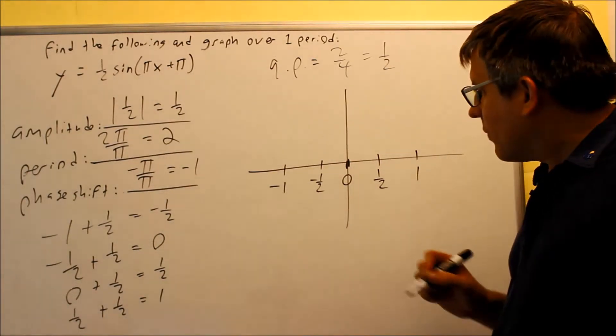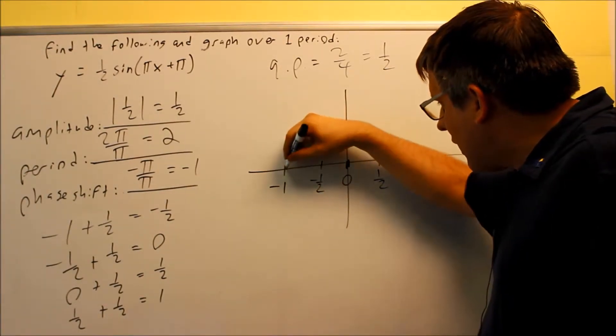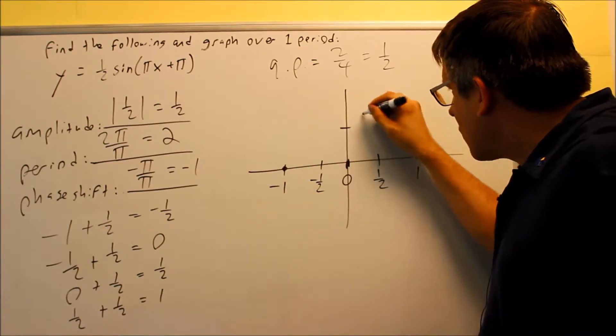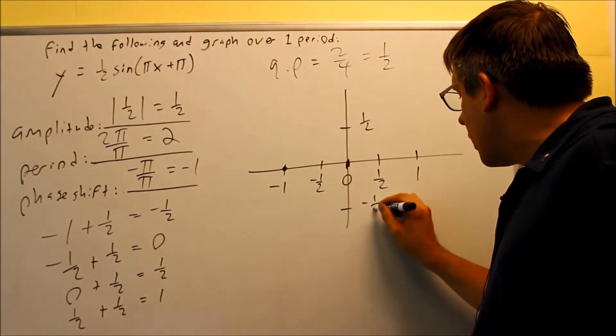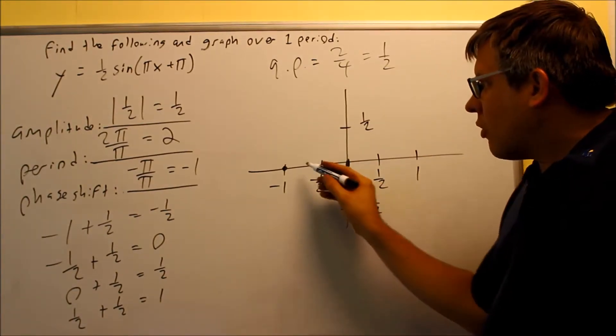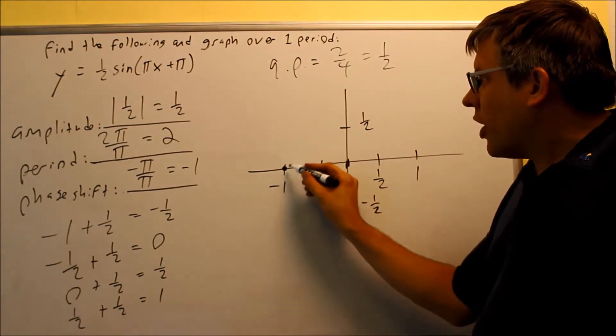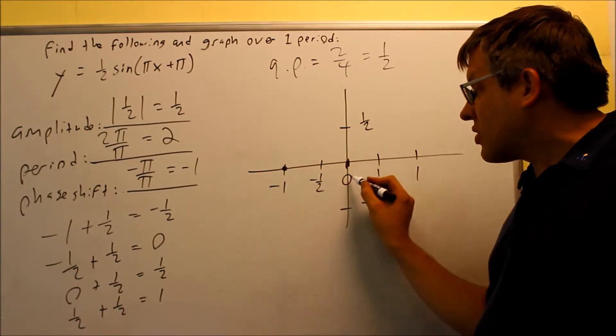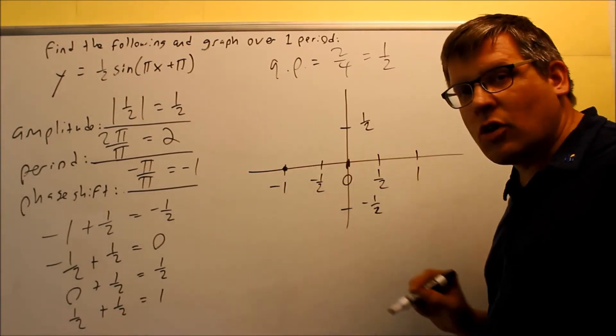It's a sine graph. Sine graphs will always begin on the x axis. It's going to go up to 1/2 and down to negative 1/2, that's going to be my amplitude in this case. So I'm starting at this point, I have to start at negative 1, I'm not starting at 0 because the graph got shifted over to the left.